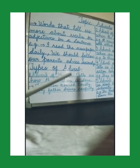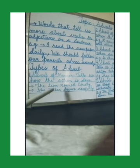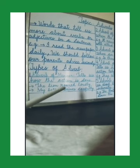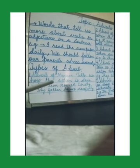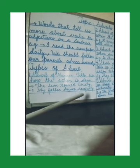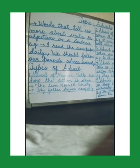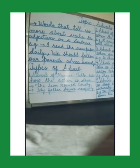The lion roared loudly. Another example: 'My father drives carefully.' Here 'drives' is the verb, but how does my father drive? He drives carefully. So 'loudly' and 'carefully' are adverbs of manner. Most adverbs of manner are formed by adding -ly at the end of an adjective — for example, 'loud' becomes 'loudly' and 'careful' becomes 'carefully.'